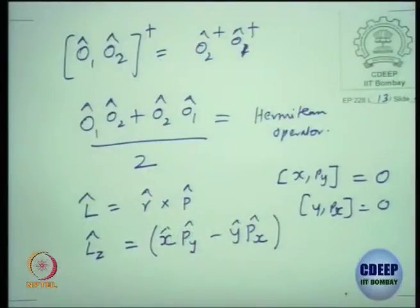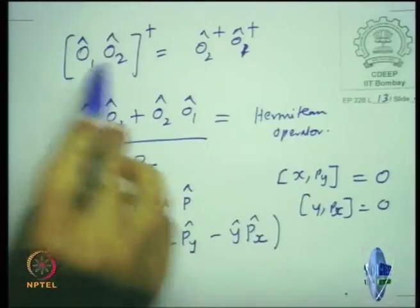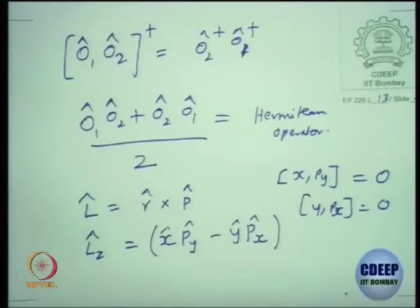So I am slowly getting to the point that there are two kinds of operators: operators which are commuting and operators which are not commuting. Commuting operators are what we call compatible operators, and non-commuting operators are incompatible operators. What did we do further in the last lecture?